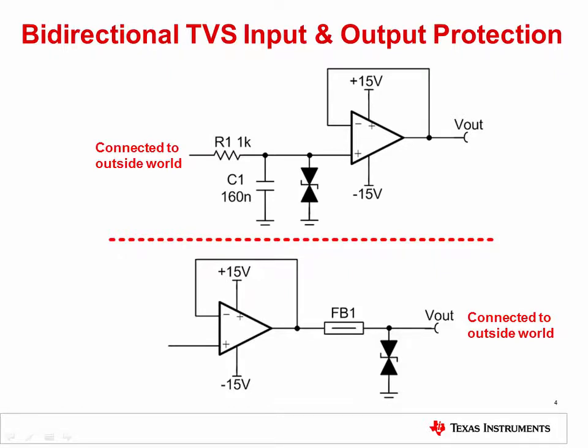A bidirectional TVS diode can be used to protect the input or output of an amplifier circuit. At the input, the TVS diode limits the input voltage to levels which are safe for the op amp. An RC circuit is used to attenuate fast input transients, which we'll discuss more on the next slide. The output protection uses a ferrite bead and a bidirectional TVS diode to again limit the output voltage to safe levels. The ferrite bead is used in the output because a fixed resistor would introduce voltage drop errors and possibly limit the output swing.